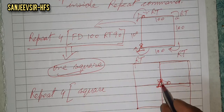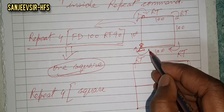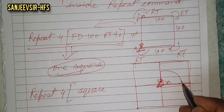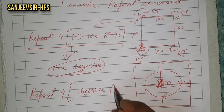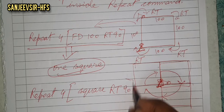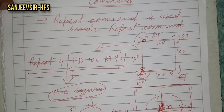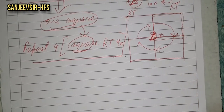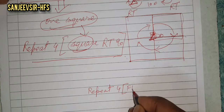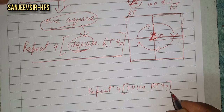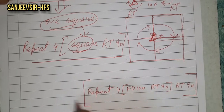After one square is done, the turtle needs to get into position for the next square. The turtle will rotate four times using RT 90. So the overall command will be: repeat 4 [repeat 4 [FD 100 RT 90] RT 90], where the inner part draws one square and the outer RT 90 repositions the turtle for the next square.